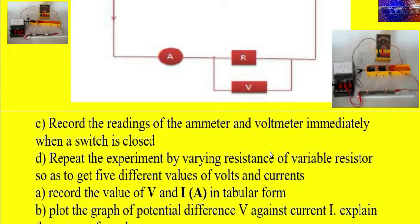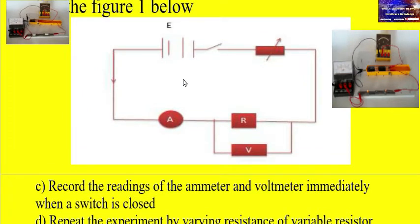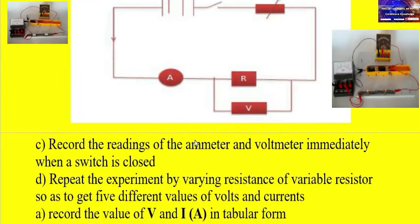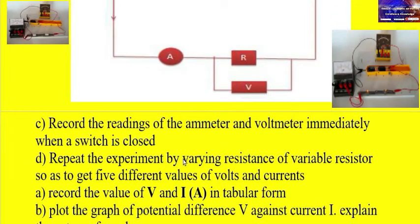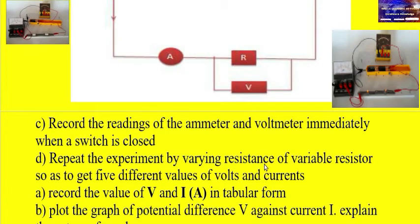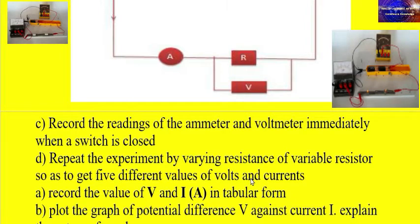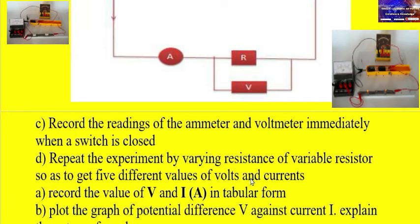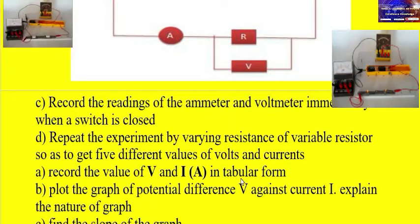Another procedure: record the readings of the ammeter and voltmeter immediately when the switch is closed. After connecting the circuit and inserting the battery, close the switch and record the first readings from the ammeter and voltmeter. Then repeat the experiment by varying the variable resistor so as to get at least five different readings of voltage and current. Adjust the rheostat to get five different readings.